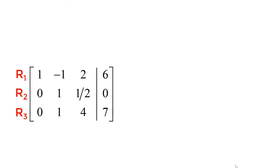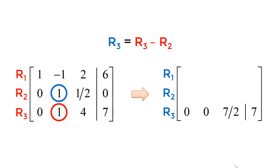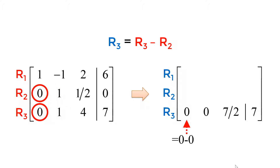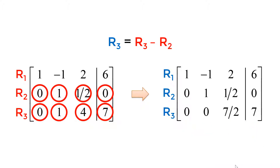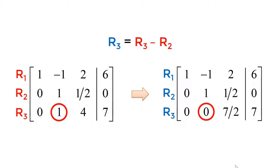Next step is to reduce my 1 to 0. I will use 1 in the second row, second column as a pivot point. Since I have 1, I will subtract the second row from the third row element by element. My 0 comes from 0 minus 0, my 0 comes from 1 minus 1, my 7/2 comes from 4 minus one-half, and my 7 comes from 7 minus 0. I keep all elements in the first two rows the same. You successfully made 0 in the third row, second column.